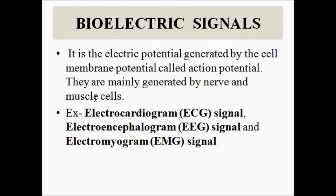This action potential is the main source of bioelectric signals and they are mainly generated by nerve and muscle cells. There are certain signals associated with it: the electrocardiogram (ECG) signal, which is the action potential generated by the heart muscles; the electroencephalogram (EEG) signal, which is the electrical signal generated by the individual neurons in the brain; and the electromyogram (EMG) signal, which is the electrical signal generated by the skeletal muscles — the biceps, triceps, thighs, hips, and other muscular areas.